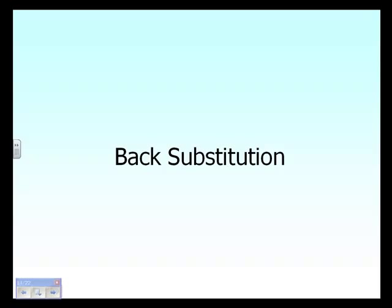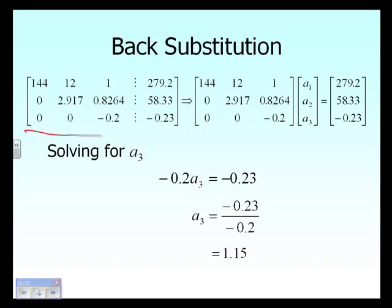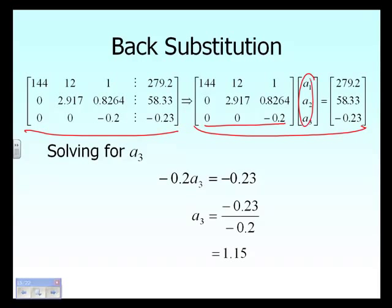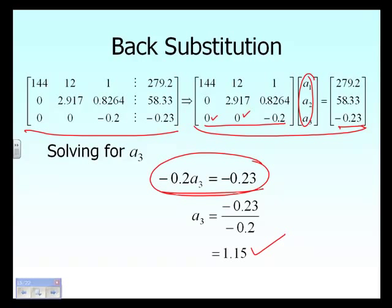Now we conduct the back substitution steps, which are exactly the same as in the Naive Gaussian elimination method. We rewrite the augmented matrix in matrix form for clarity. Back substitution starts from the last equation; since the last row has zeros in two positions, we have one equation and one unknown, giving us the value of a sub three.